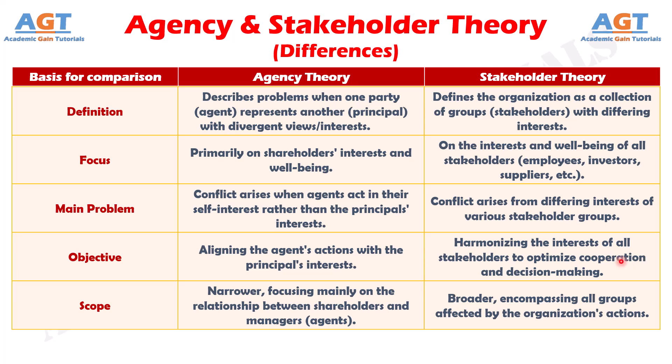Number five: agency theory is limited to principal-agent relationships, whereas stakeholder theory includes a wide range of internal and external stakeholders.